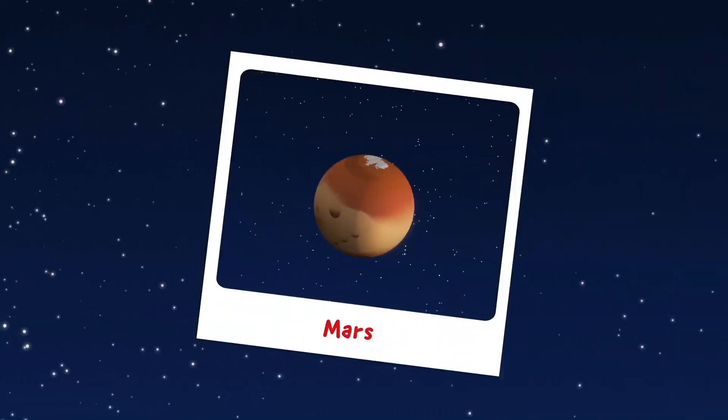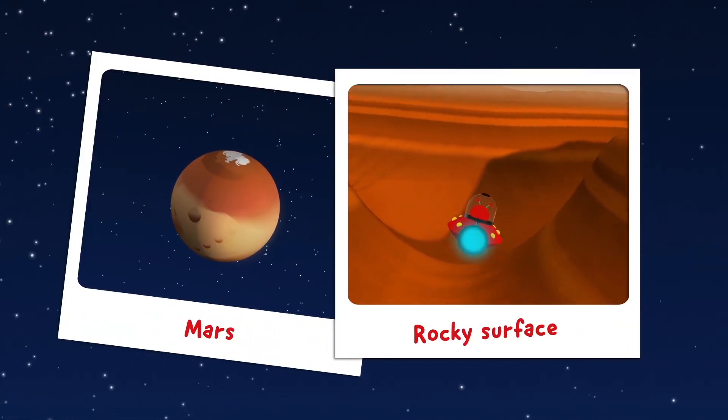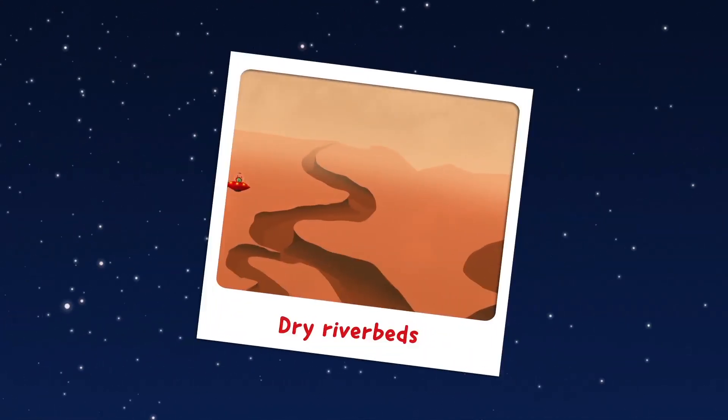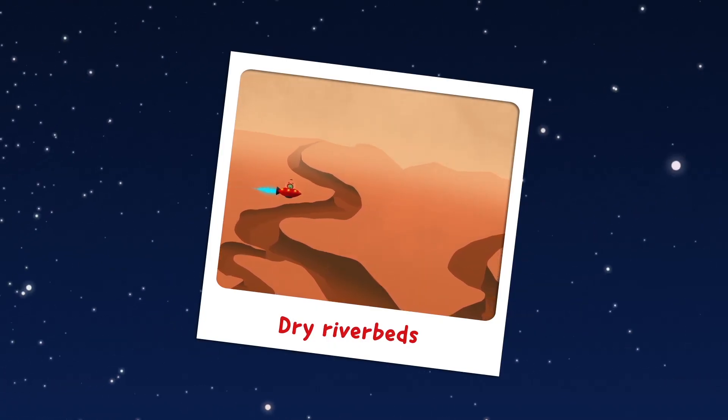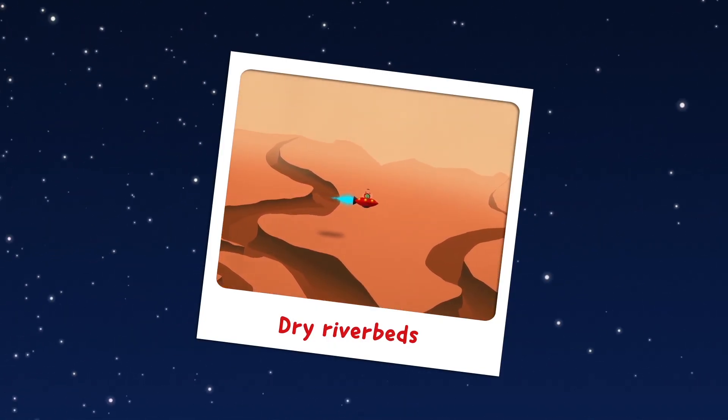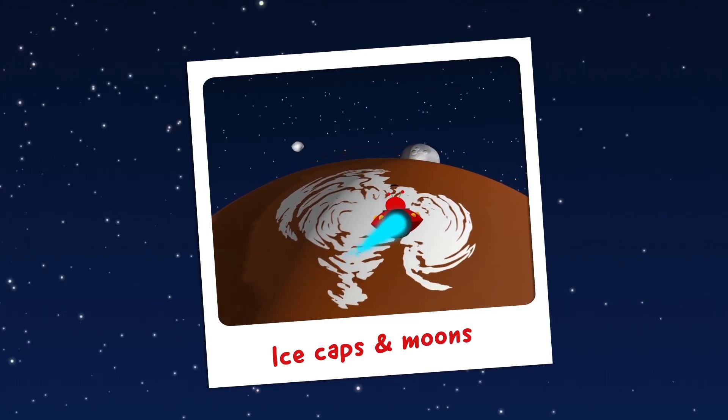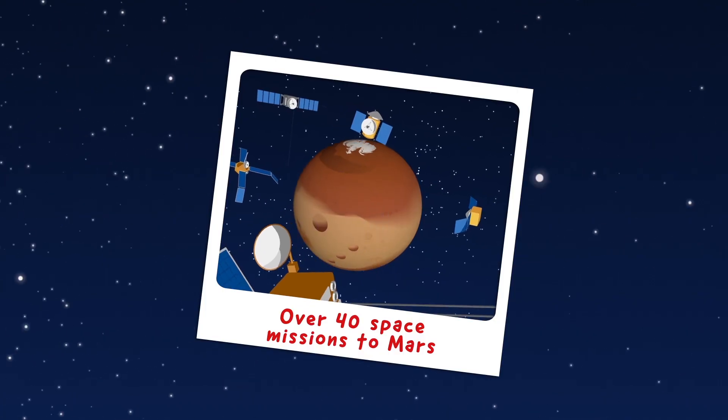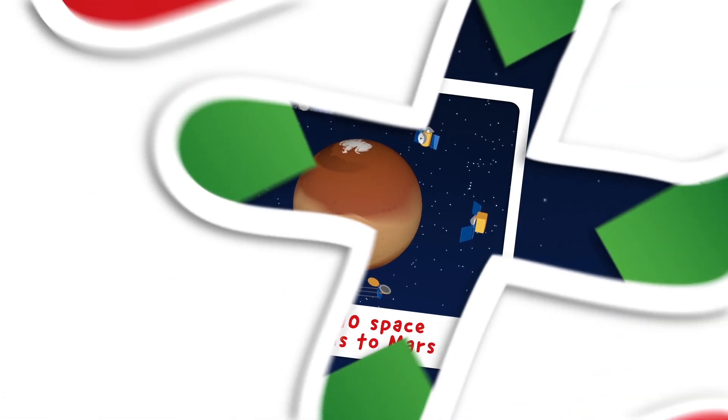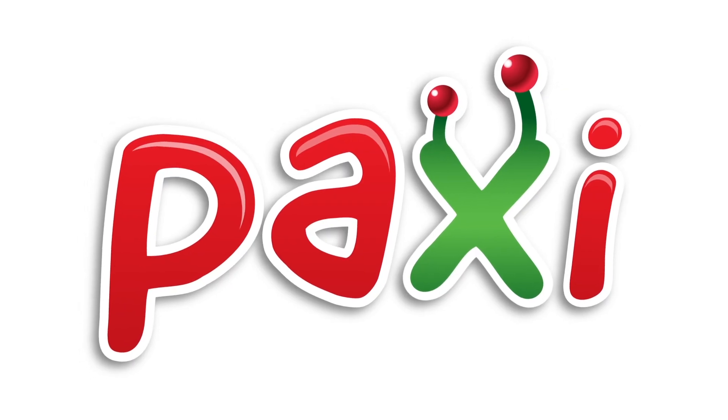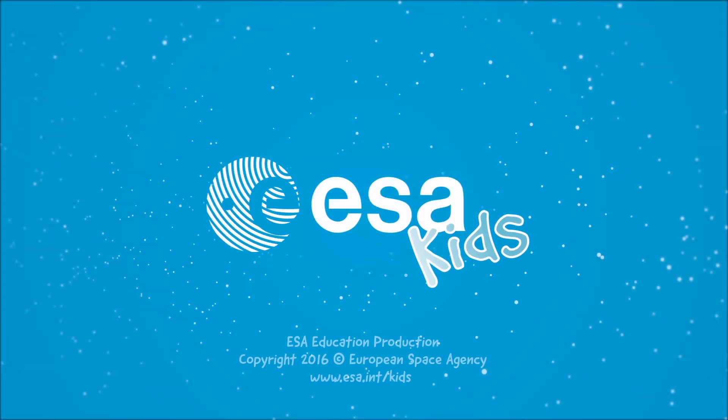So, we've seen that Mars has a rocky surface with really fascinating features. It has mountains and valleys. There are also dry riverbeds. There must have been lots of water here in the past. It even has polar ice caps and two small moons. And there are robots exploring Mars.